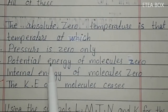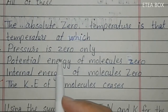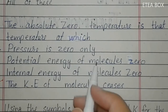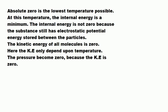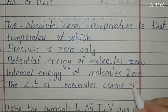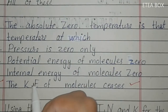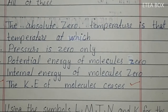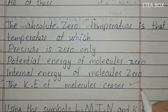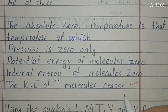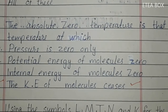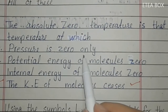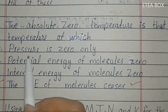Fifth MCQ: absolute zero temperature is the temperature at which the internal kinetic energy of molecules ceases. Potential energy depends on intermolecular force, so that is not zero. At absolute zero, motion stops and kinetic energy of molecules ceases — kinetic energy becomes zero. In turn, the pressure also becomes zero because pressure depends on kinetic energy. So here option D is correct.